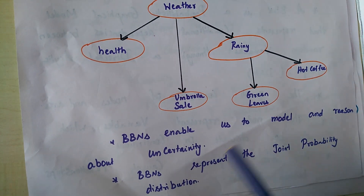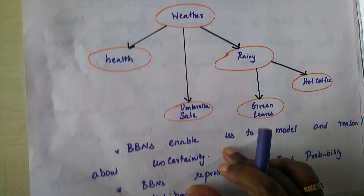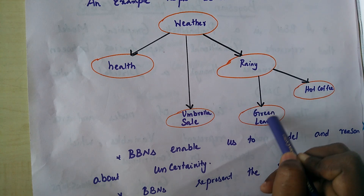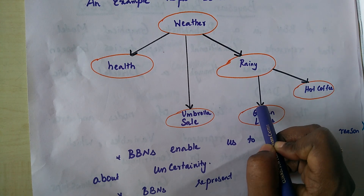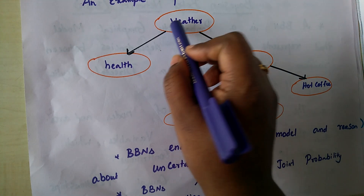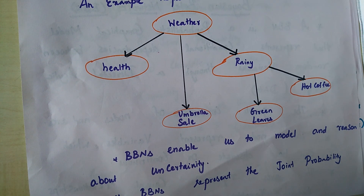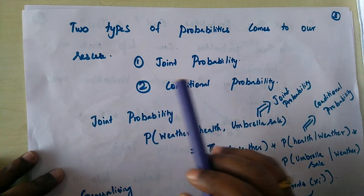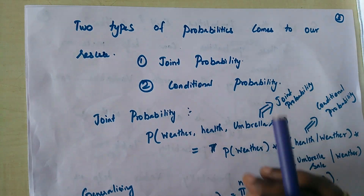We are going to explore the joint probability distribution of all these random variables. For predicting green leaves, it is dependent on the joint probabilities of its ancestors. There are two probabilities that come to our rescue in BBN: joint probability and conditional probability.